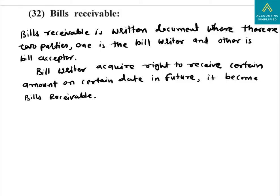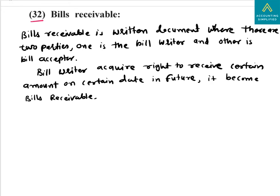Welcome again. We are continuing the terminology we have been learning since the last two sessions. In this lecture, we will complete the terminology from number 32 onwards, as given in your books. We are going to learn some very important terminology. First is bills receivable, followed by bills payable. Once we learn bills receivable, we can automatically understand bills payable.